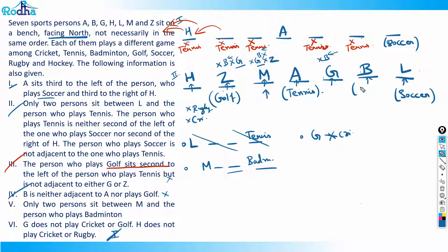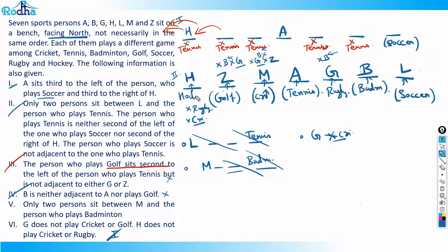M is placed. Now for sports: H doesn't play cricket, G doesn't play cricket — so only M is left for cricket, meaning M plays cricket. H doesn't play rugby, so G must be playing rugby. That leaves H playing hockey as the only remaining sport. The set is now completely solved — smoothly done by following this method.